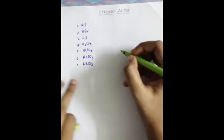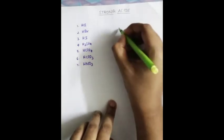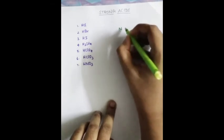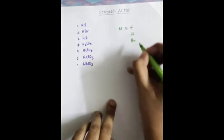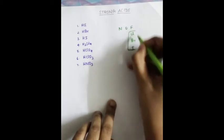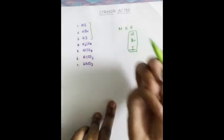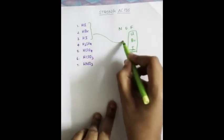In the periodic table, there is an order in the halogen family. You can use nitrogen, oxygen, fluorine, chlorine, bromine, iodine. If you use hydrogen with these last 3 halogen elements — chlorine, bromine, iodine — you get 3 strong acids.